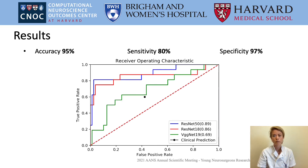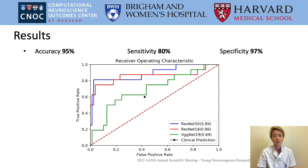The ROC curve shows performance with AUC per model, with the ResNet-50 showing the highest performance: an area under the curve of 0.89, an accuracy of 95%, sensitivity of 80%, and a specificity of 97%. The performance of the clinicians is indicated with a single black dot, with a true positive rate of 0.60 and a false positive rate of 0.42, an accuracy of 58%, sensitivity of 60%, and a specificity of 58%.